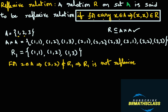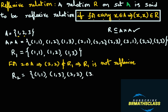Now I will take one more example to understand this relation. I will take another subset of A cross A. Let R2 equal {(1,1), (1,3), (2,2), (3,1)}. Is R2 a relation on set A? Since R2 is a subset of A cross A, R2 is a relation on A.